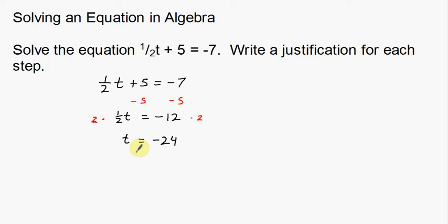Those are the steps I took — notice I left them in red. Now we're going to go back and justify those steps. My first justification: this first line was given to us. Whenever you're doing proofs, if anything is given to you, that's going to be the first line of your proof.